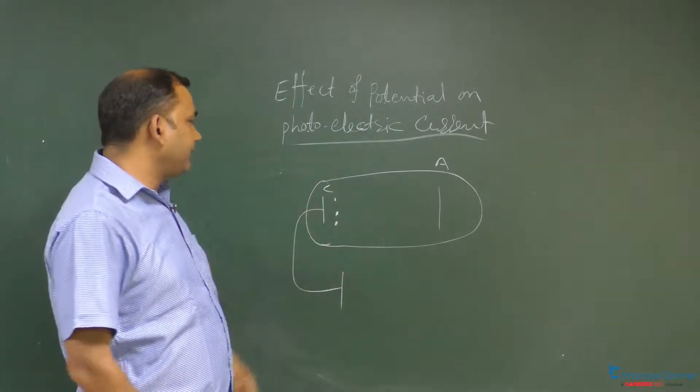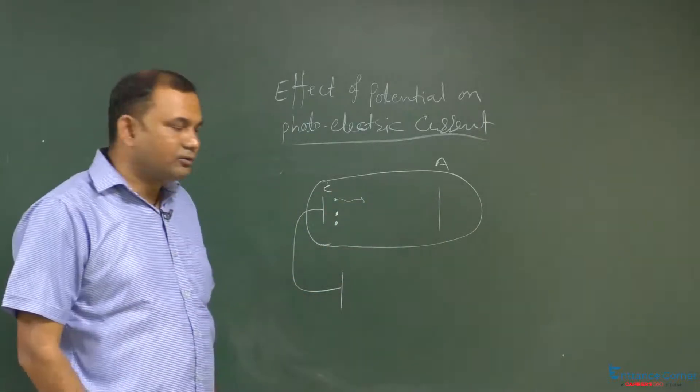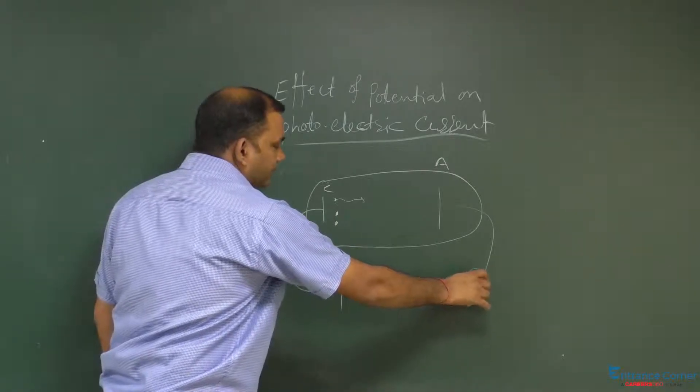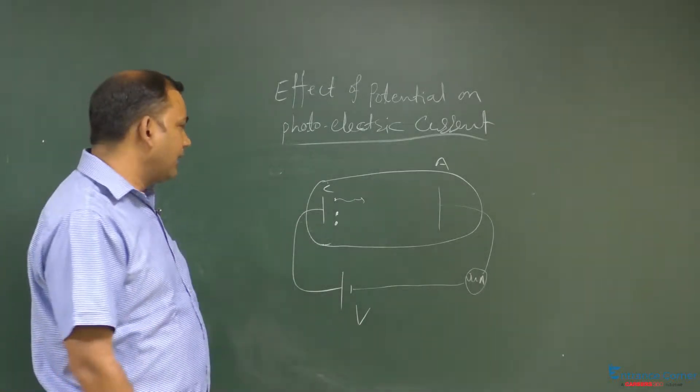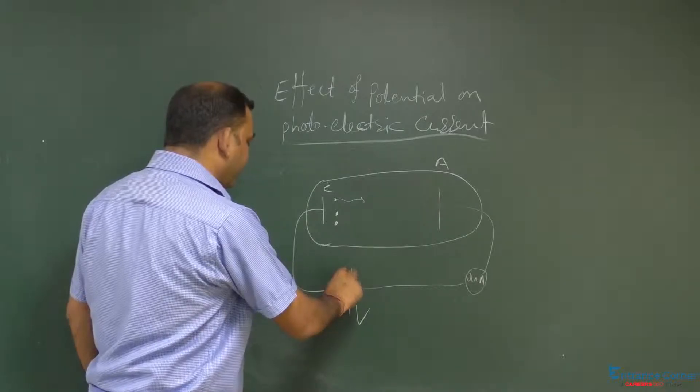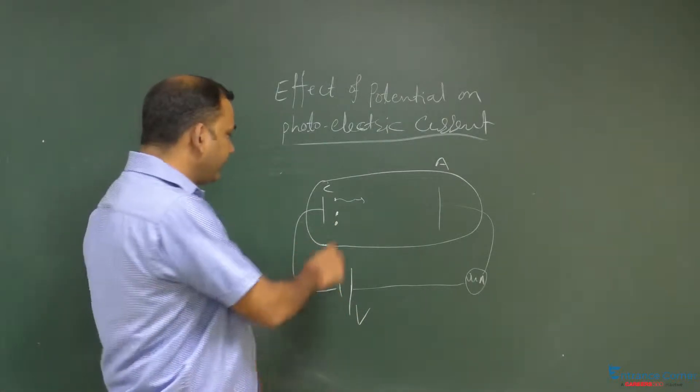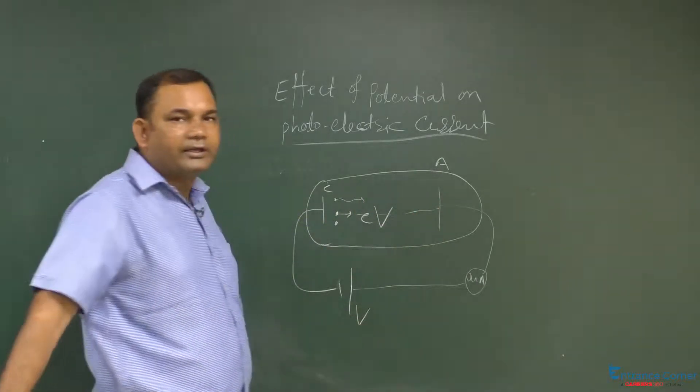अब photoelectrons के पास अगर खुद के पास kinetic energy है, तो यह यहाँ पहुँच जाएगा, तो current develop हो जाएगा. और हम यहाँ पे potential apply कर रहे हैं, अगर खुद के पास energy नहीं है, तो यहाँ पे potential लगाएंगे, और वो इसको kinetic energy देगा, EV, इस kinetic energy से यह यहाँ पहुच जाएगा.